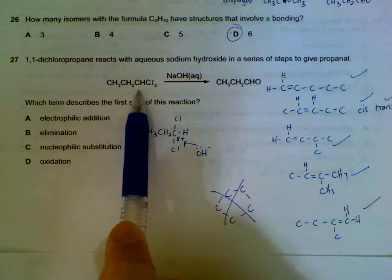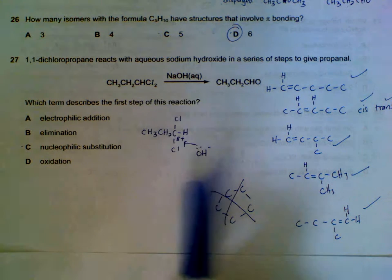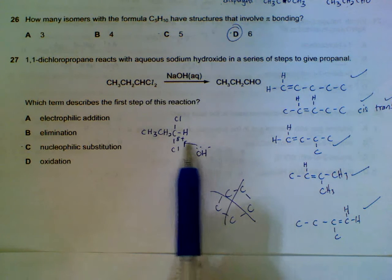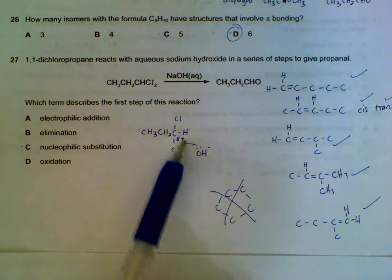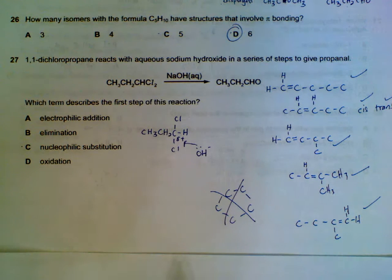27, we have a haloalkane. If we boil it with sodium hydroxide, there will be a nucleophilic substitution. This is partially positive. It will be attacked by your nucleophile, your OH-.